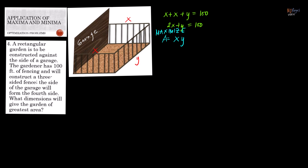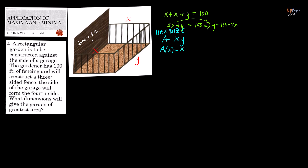The area A is in terms of x and y, but we have the relationship 2x + y = 100. Solving for y in terms of x, we transpose 2x to the other side: y = 100 − 2x. Therefore, A can be written in terms of a single variable: A(x) = x(100 − 2x) = 100x − 2x².